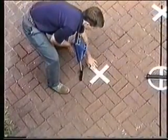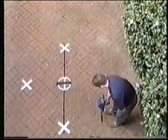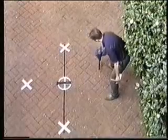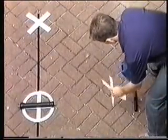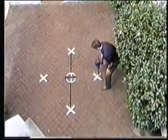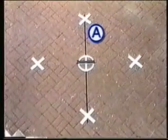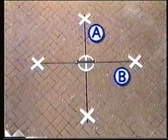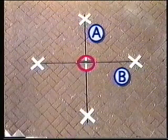Mark this spot — it is the first end null. To find the other end null, repeat this procedure on the other side of line A. You have now located both end nulls. Draw line B through this pair of null marks. The transmitter is located at the center of the cross formed by line A and line B.